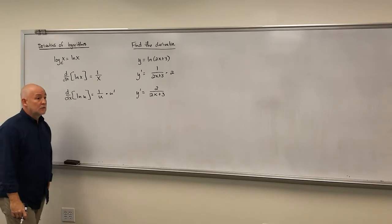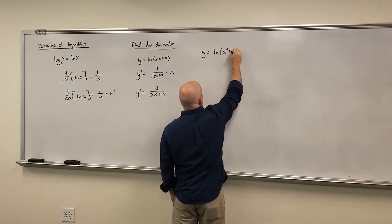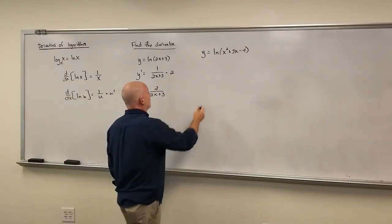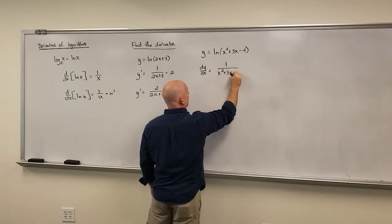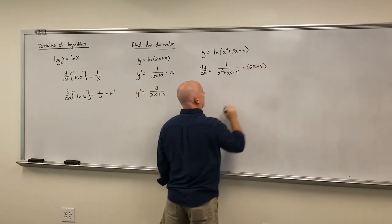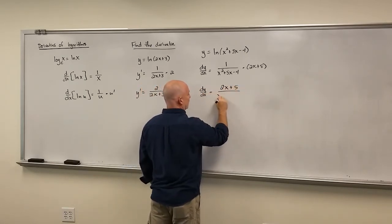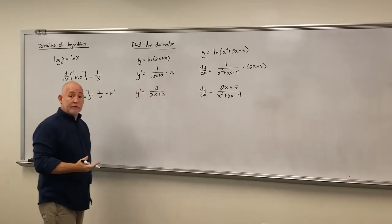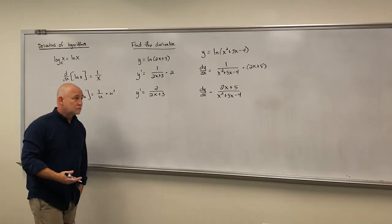If we had something like y is equal to the natural log of x squared plus 5x minus 4 and we need to find the derivative — that's just a logarithm, so we know how to take it. It's 1 over its argument times the derivative of that argument. The derivative of the argument is 2x plus 5. We can clean that up by writing the derivative on top: 2x plus 5 over x squared plus 5x minus 4. The way to memorize the rule is 1 over the argument times the derivative of the argument.